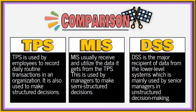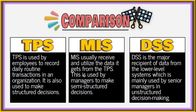To summarize: TPS records daily routine transactions and becomes the major source of data for other systems, aiding in structured decision-making with defined rules. MIS receives data from the TPS and generates reports used by middle-level managers for semi-structured decisions, partly based on set guidelines and judgmental calls. DSS is a major recipient of data from lower-level systems, used by senior managers for unstructured decision-making concerning the long-term planning of the organization.